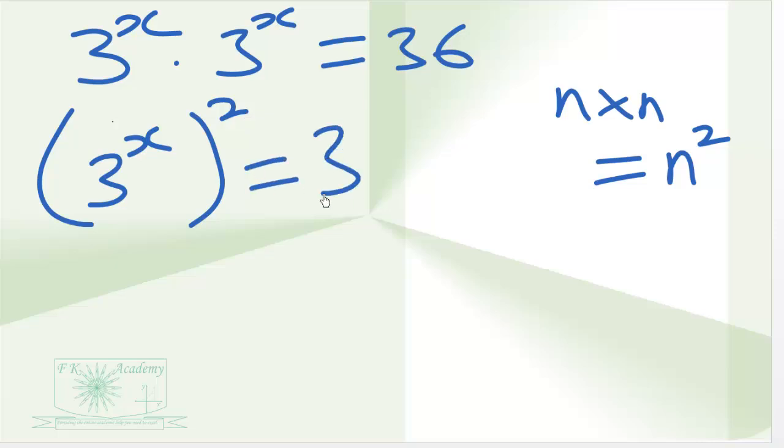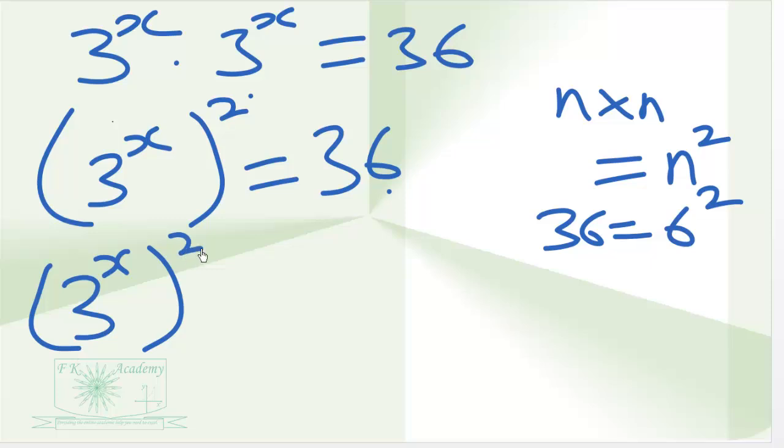And this is giving us 36 on the right hand side. Since we have an exponent 2 here, let's see if we can express 36 as a number exponent 2. So 36 is equal to 6 squared. So 3 exponent x all squared is equal to 6 power 2.